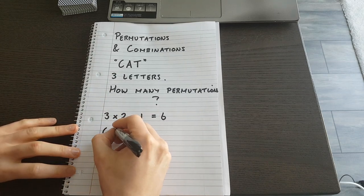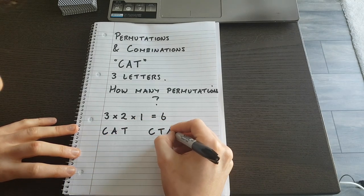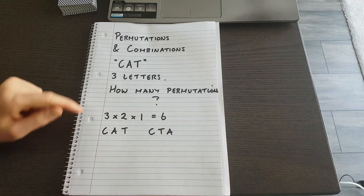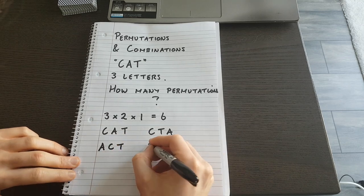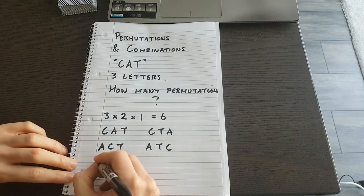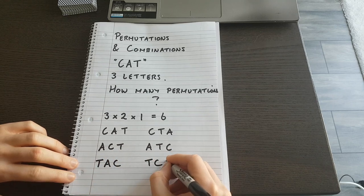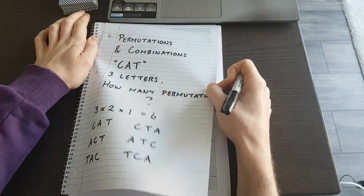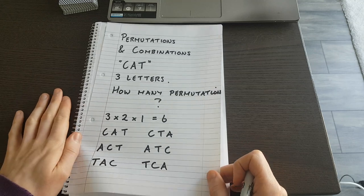We can actually list them. The ones that begin with C are: C-A-T and C-T-A. The ones that begin with A are: A-C-T and A-T-C. Then the ones that begin with T are: T-A-C and T-C-A. We can see there is a total of six. That's the basic idea of a permutation — how many ways can I rearrange something where order matters.